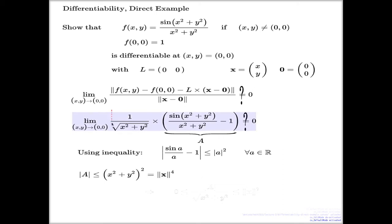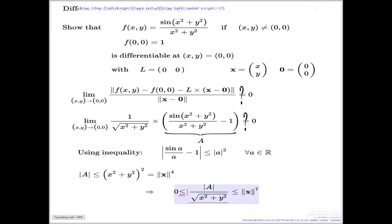And so if I try to control this whole expression under the limit, it will be like this with a correction for the typo, of course. Because absolute value of A is controlled by this value, the denominator is just one single length of x. X is here.